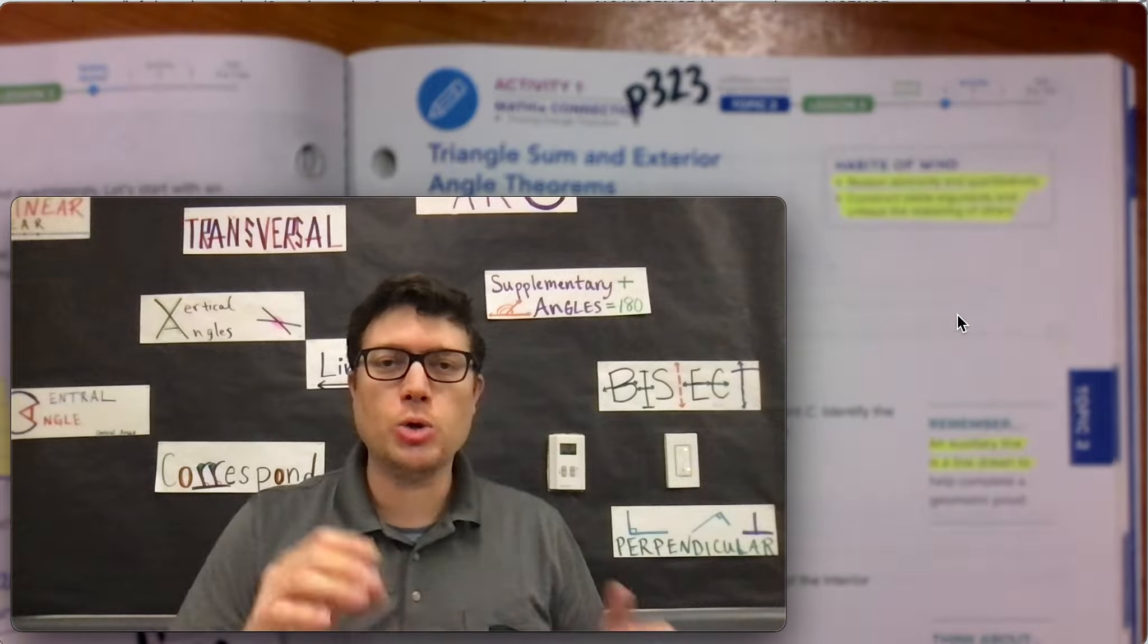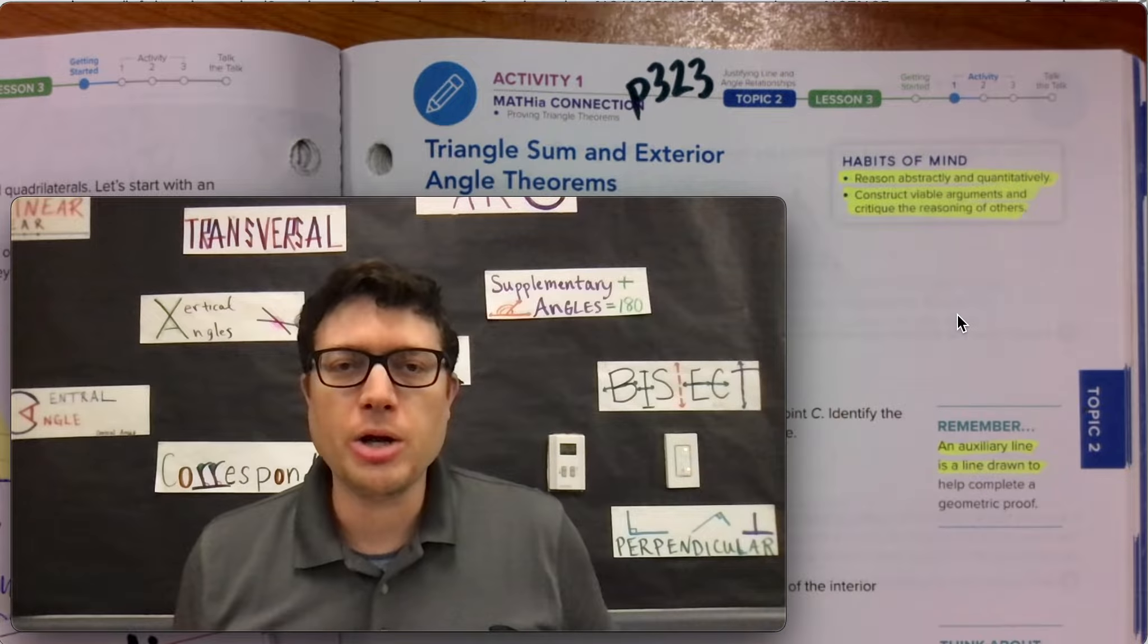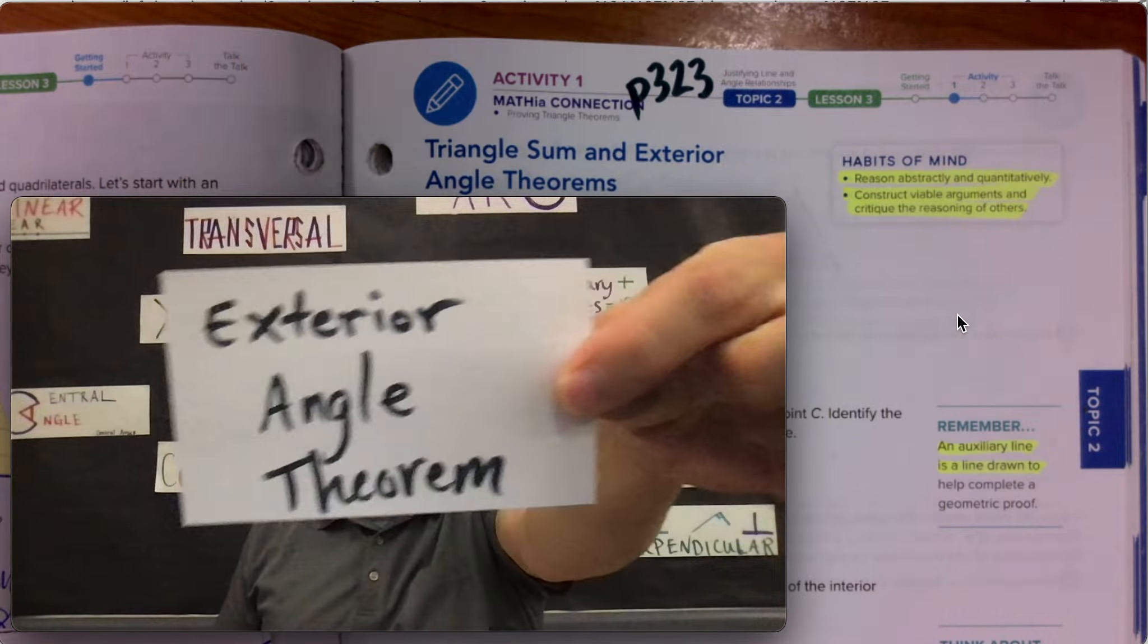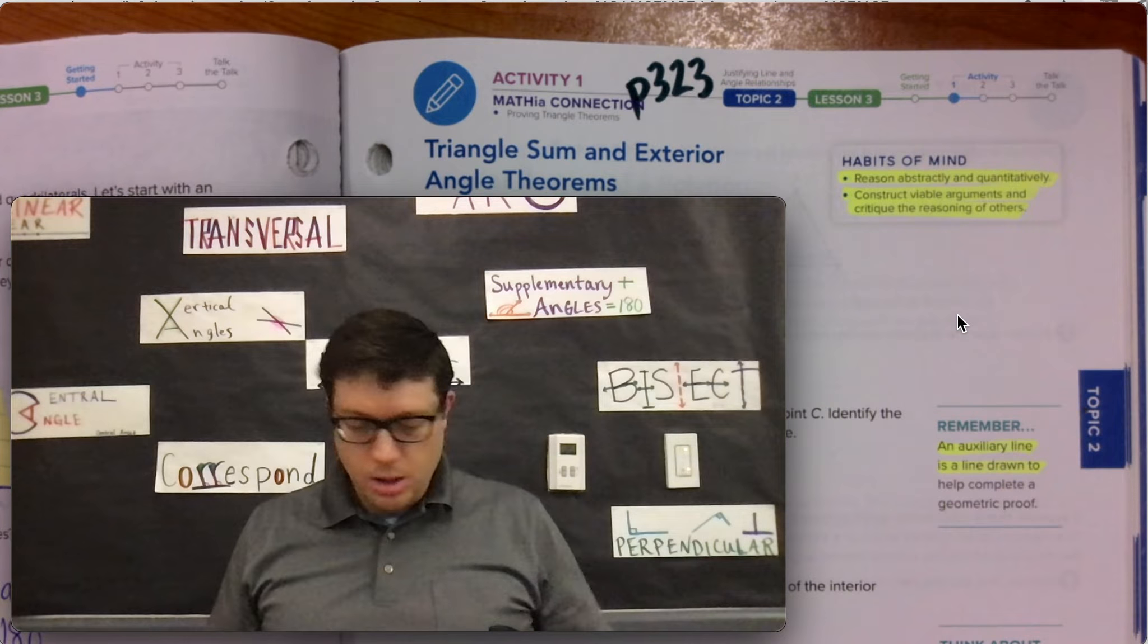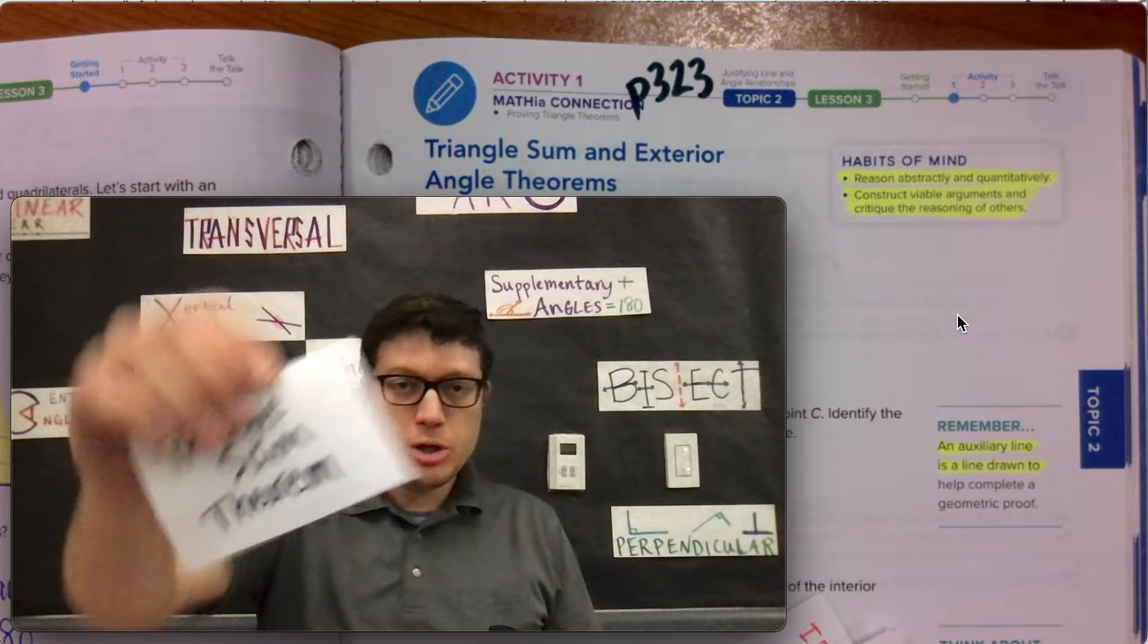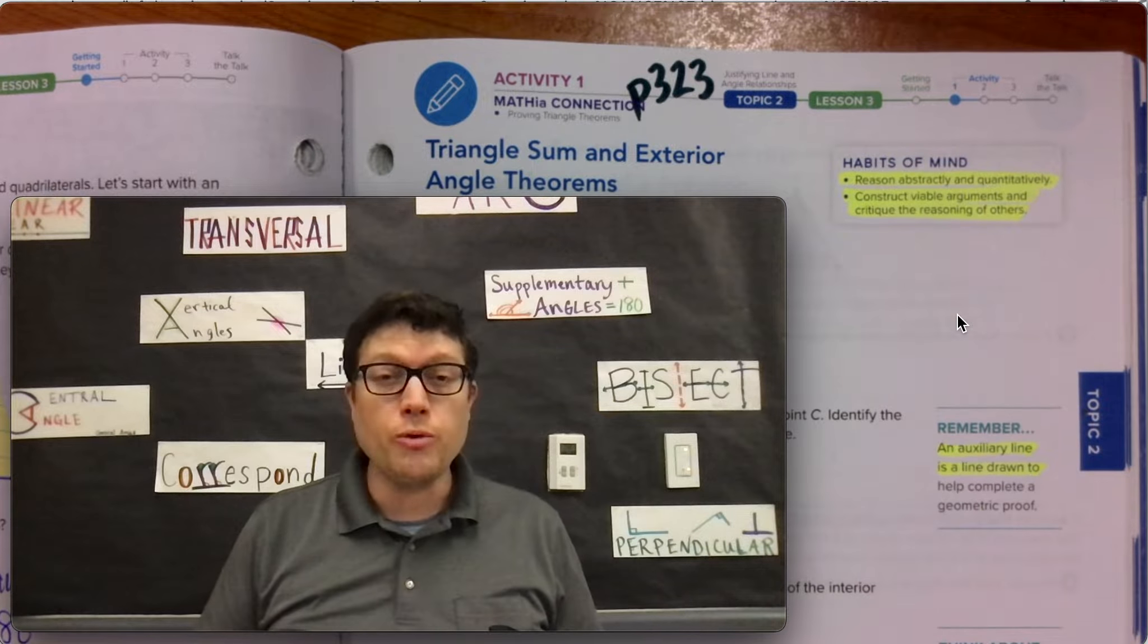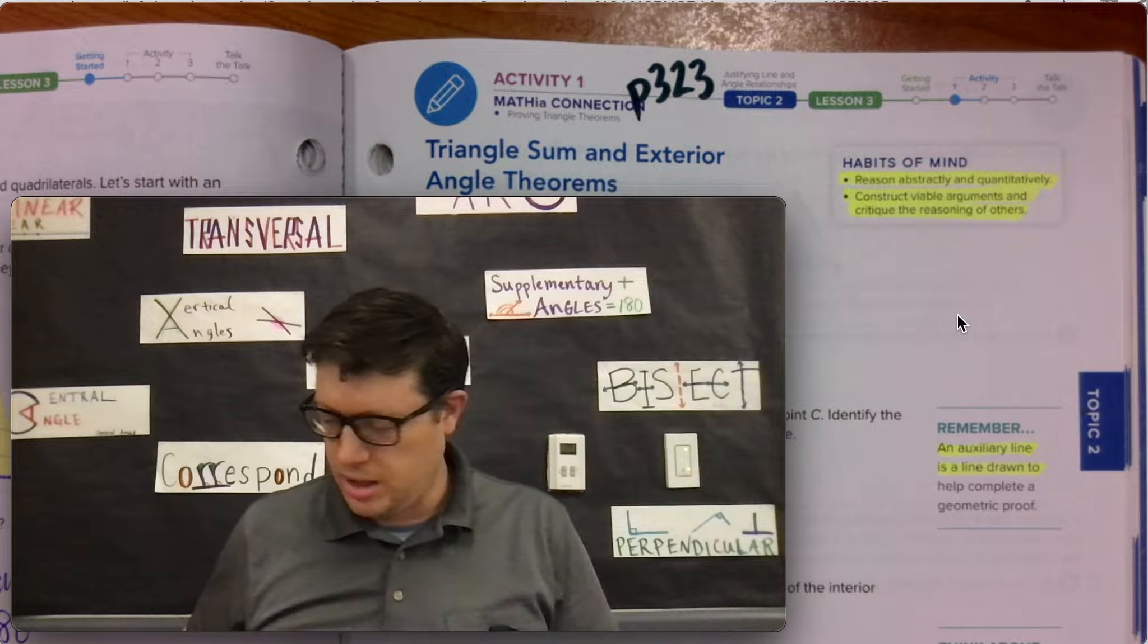We are talking about the triangle sum and exterior angle theorems. If you haven't made them yet, please do make the note card exterior angle theorem or make the note card triangle sum theorem because we are going to talk about their proofs, at least the first one in this lesson today.